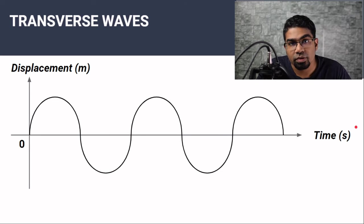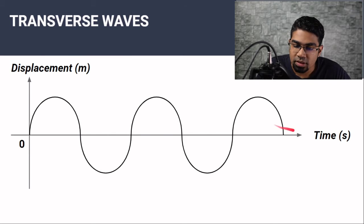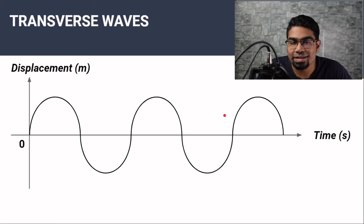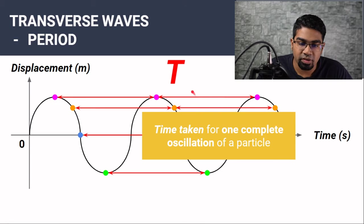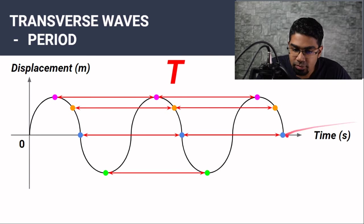The second type of graph for transverse waves is the displacement-time graph. Instead of displacement versus distance, this time we have displacement versus time. Displacement has the same meaning for both graphs, but this time we are recording it against time. When we take two consecutive points in phase, we are measuring the time taken for one complete oscillation, and this is known as the period. The period is represented by capital T, and all these intervals on the time axis represent the period.